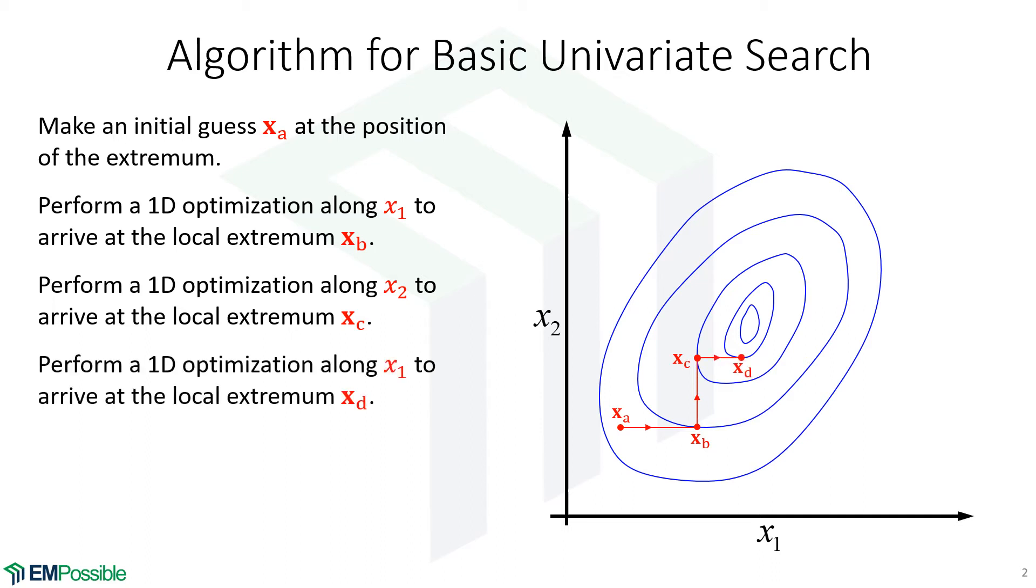We optimize along X1. We optimize along X2, and so on. And we just keep repeating and optimizing along each independent variable at a time. And we notice that we are slowly converging in on to the extremum.